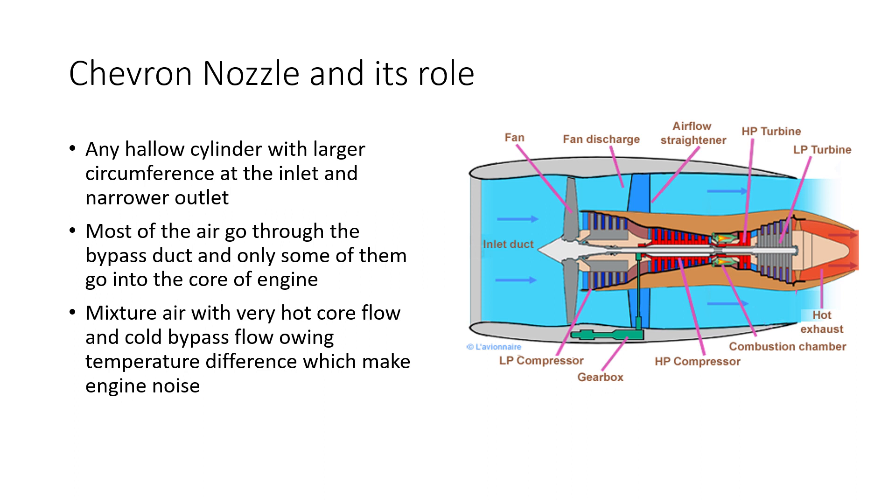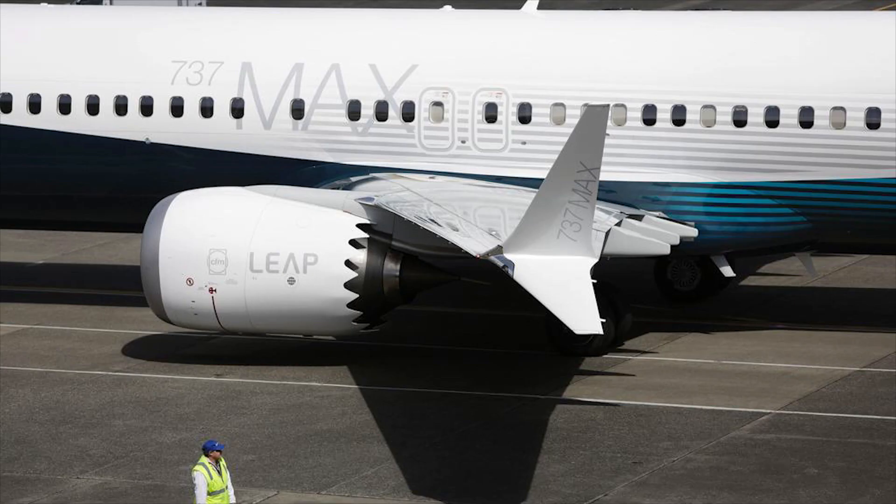The air which passes through the bypass is low in temperature, while the air coming out of the jet engine turbine is hot. The mixture of this air, owing to the temperature difference, makes the engine noisy, and the chevron nozzle is used to counter the problem of the noise.